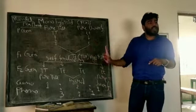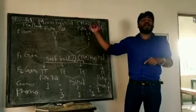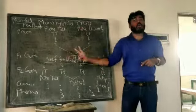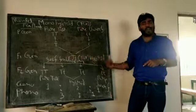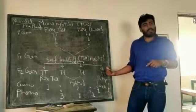So the phenotype ratio is 3 is to 1 — that means 3 tall and 1 dwarf. The genotype ratio is 1 pure tall, 2 hybrid tall, and 1 pure dwarf.